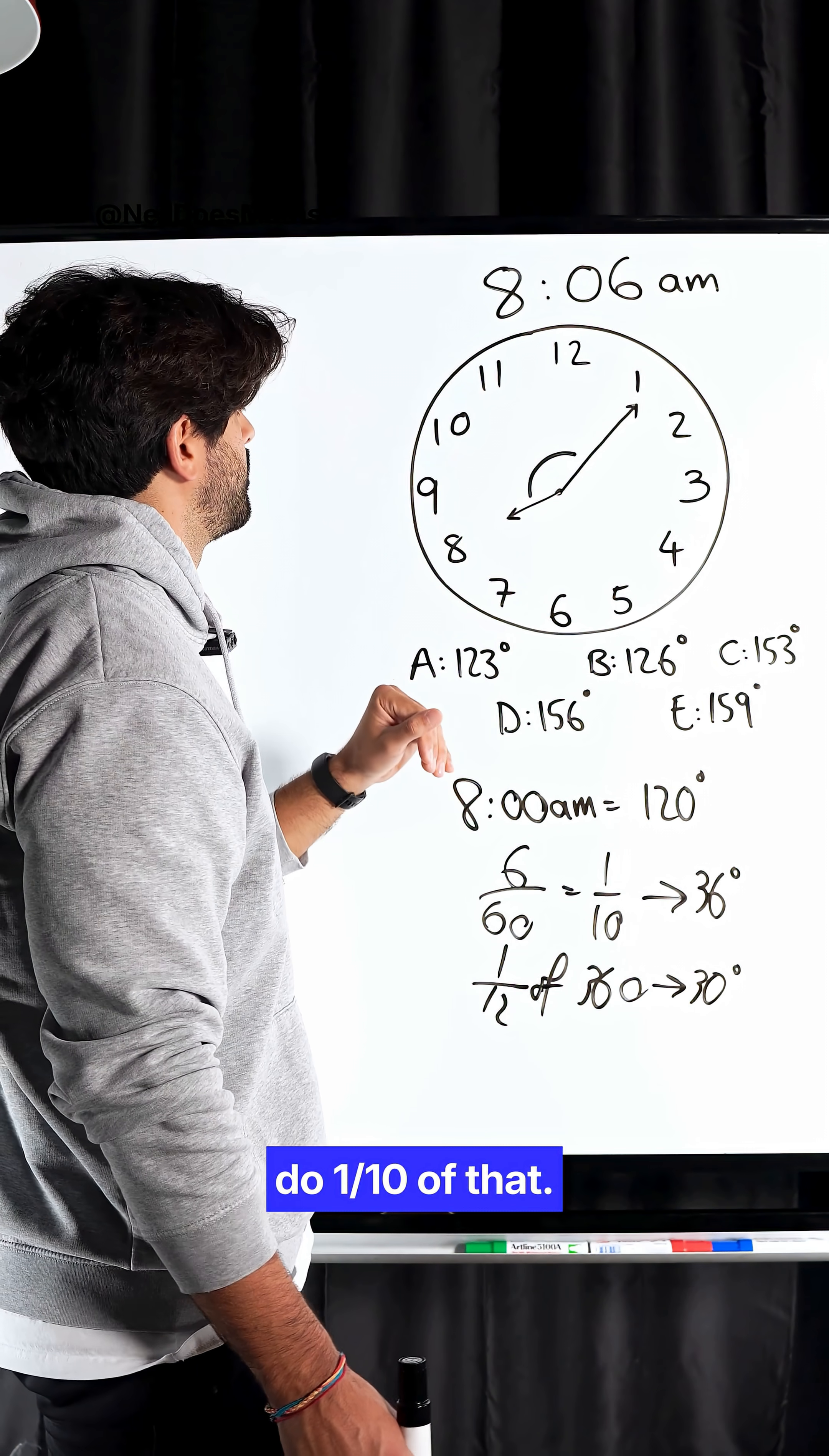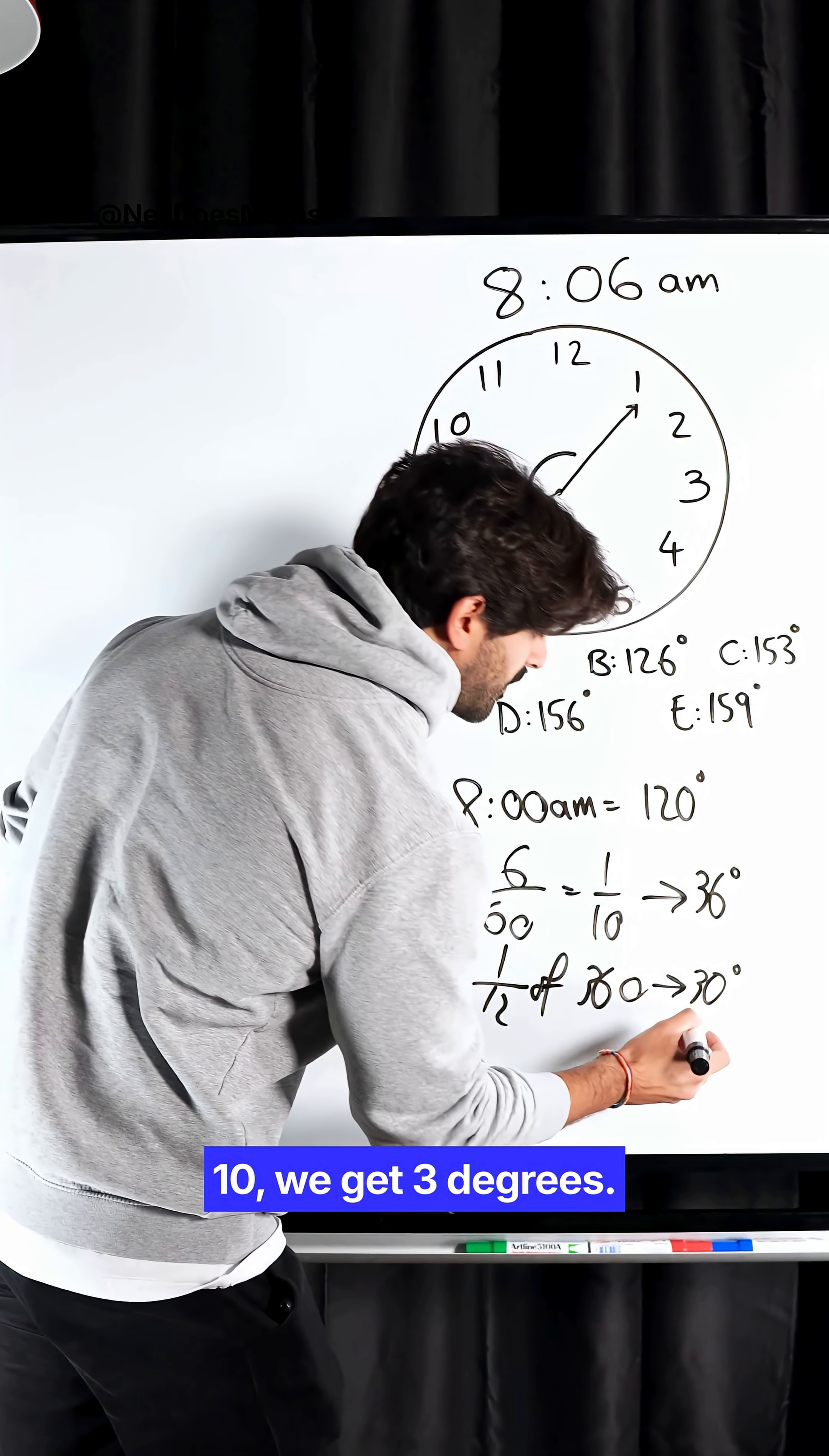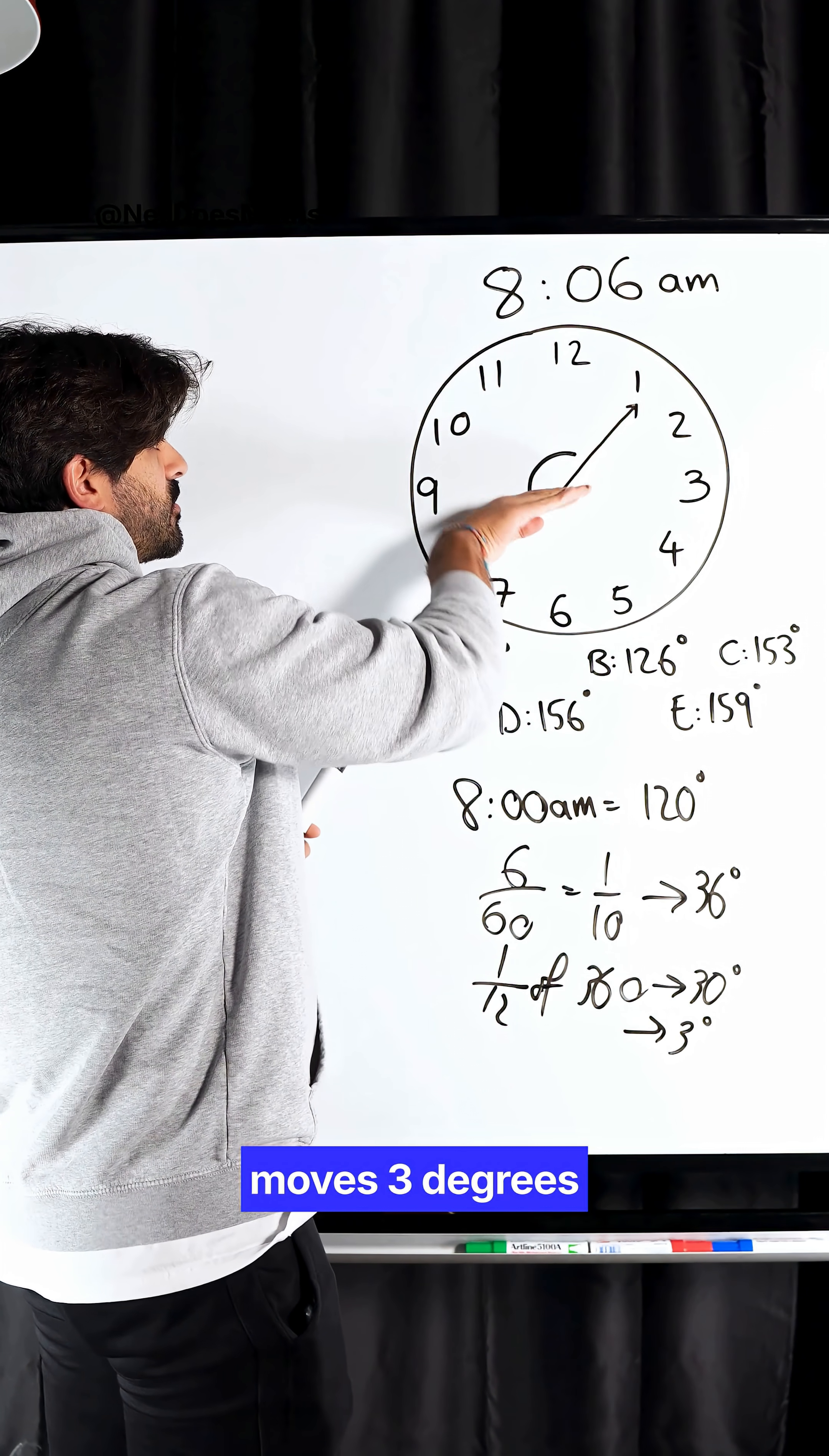We have to do one-tenth of that because it's still one-tenth of a full hour. So we divide that by 10 and get 3 degrees. So the minute hand moves 36 degrees clockwise, and the hour hand moves 3 degrees clockwise.